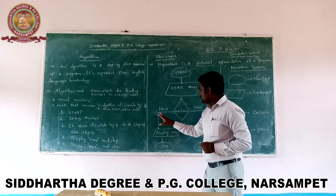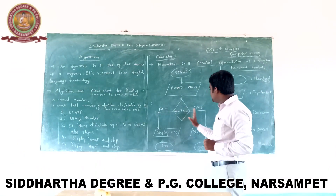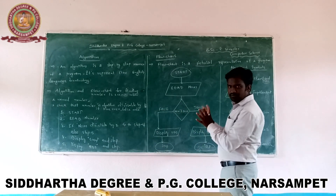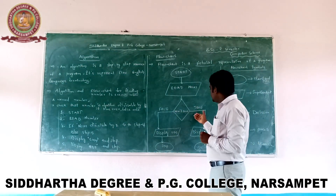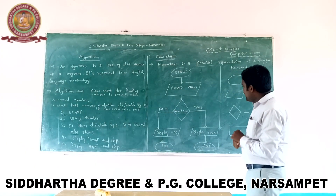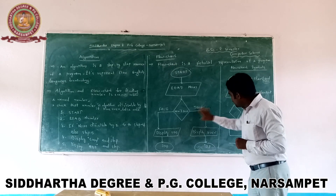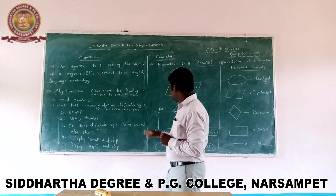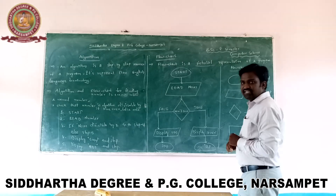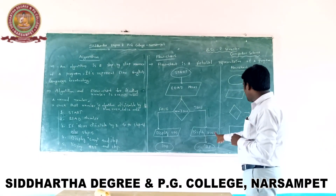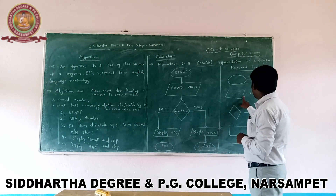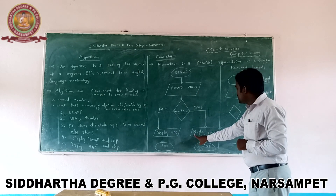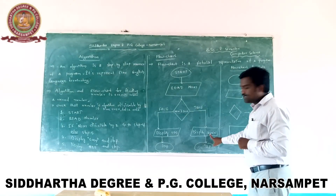The decision has two paths. The true condition means it is divisible by 2, so we go to step 4: display 'Even'. This is represented by a Parallelogram for output. After displaying 'Even', we go to Stop.